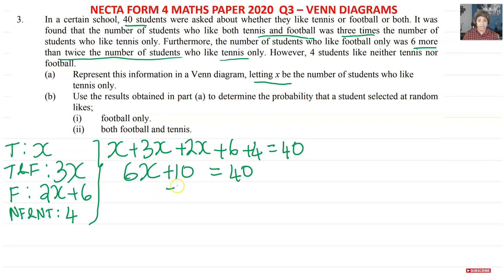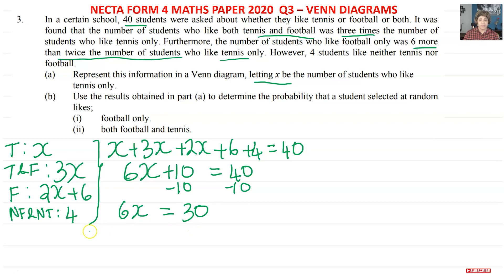We need to get rid of the 10 by doing the opposite of addition — subtract 10 from both sides. So 6x = 40 − 10, which is 30. Now divide both sides by 6: 6x ÷ 6 = x, and 30 ÷ 6 = 5. So the number of students who like tennis only is 5.